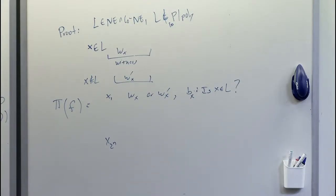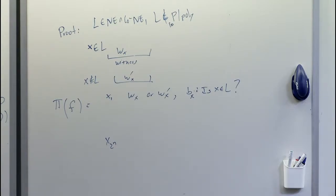So this is actually kind of an analog of the easy witness lemma for NE-intersect-coNE. I think it's quite likely that NE-intersect-coNE is not in P/poly — not just exponential time but non-deterministic exponential time intersect co-non-deterministic exponential time doesn't have polynomial-size circuits. So I believe these properties really exist.